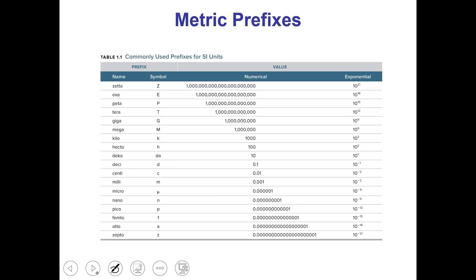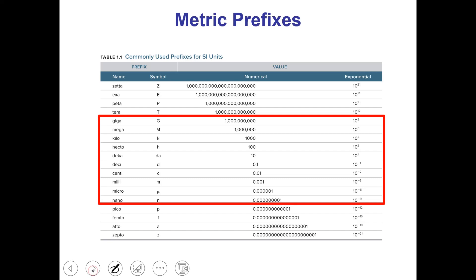The way that we make a unit bigger or smaller in the metric system is to use prefixes. This is a list of different prefixes associated with metric units. The ones you will need to be familiar with are giga down through nano. The ones larger than giga or smaller than nano we don't use as often, but giga through nano we use frequently enough that it will be helpful to know them.